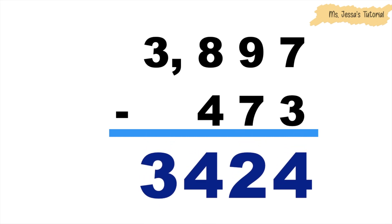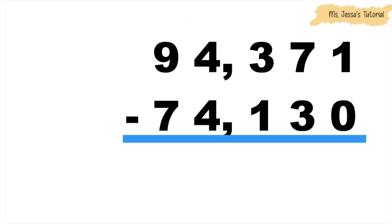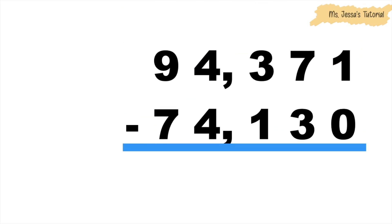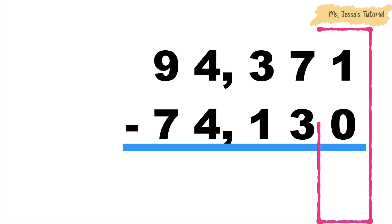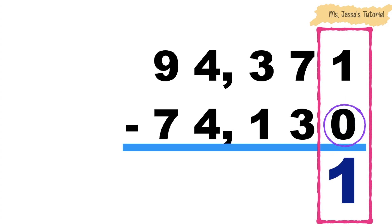How about if we have 94,371 minus 74,130? Again, children, we're going to start subtracting from the ones place. 1 minus 0 is equal to 1, because any number that is subtracted by 0, the difference is the number itself.